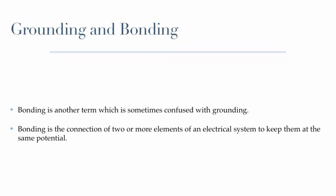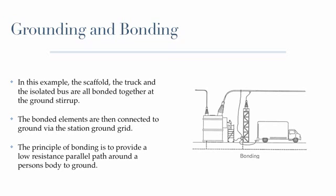Bonding is another term which is sometimes confused with grounding. Bonding is the connection of two or more elements of an electrical system to keep them at the same potential. In this example, the scaffold, the truck, and the isolated bus are all bonded together at the ground stirrup. The bonded elements are then connected to ground via the station ground grid. The principle of bonding is to provide a low-resistance parallel path around a person's body to ground.